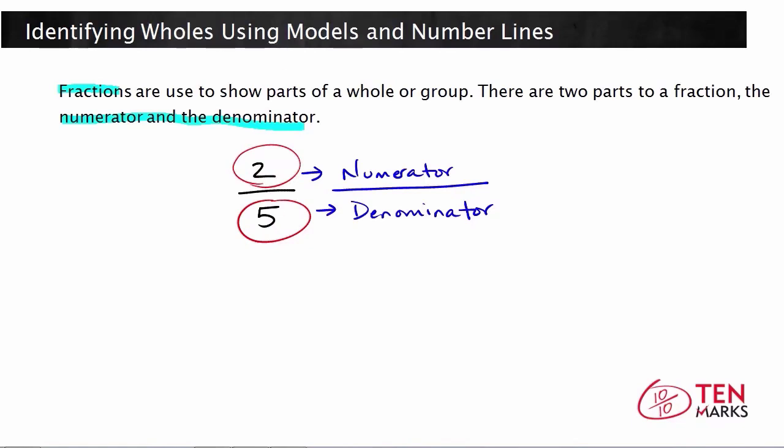Sometimes the number in the group or the numerator is larger than the number of groups itself, which is the denominator. If we're talking about one group, then the denominator is one, and the number in the group or the numerator is one or more. What I mean by that is you can have a case where you have a whole that's divided into four equal parts.